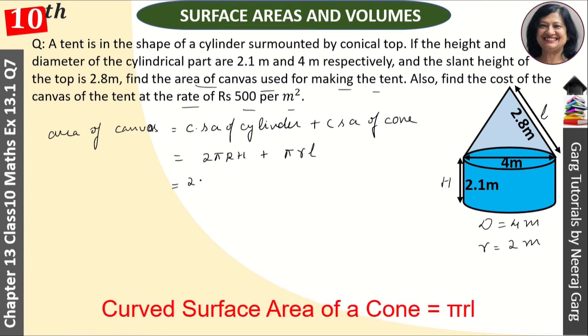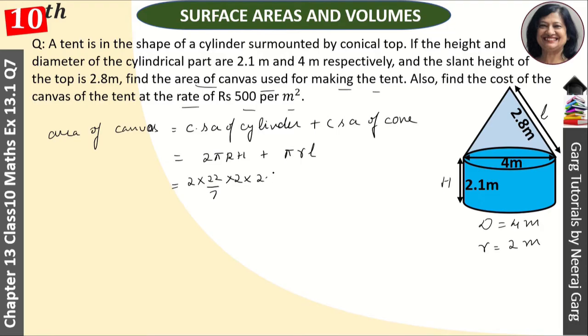Ab values put karte hai. 2 into 22 upon 7. R kitna hai 2, same hai. 2 into L hai 2.8. 22 upon 7 ko common lelete hai.